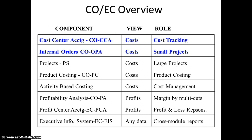So we have CO and EC overview. We have cost center accounting, cost tracking, internal orders, small projects, and projects — PS for large projects — product costing, activity-based costing, profitability analysis, profit center accounting, and the executive info system. All this comes under the controlling part.